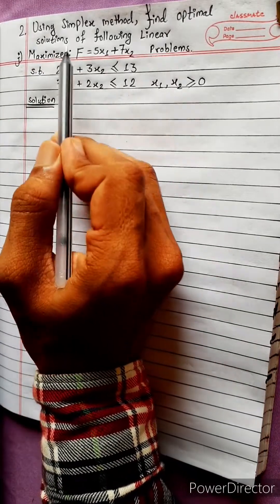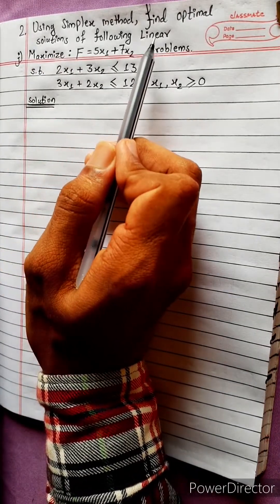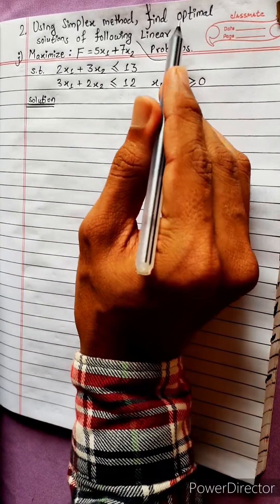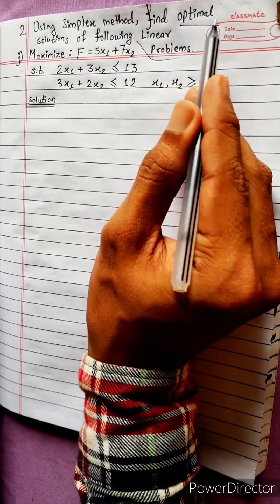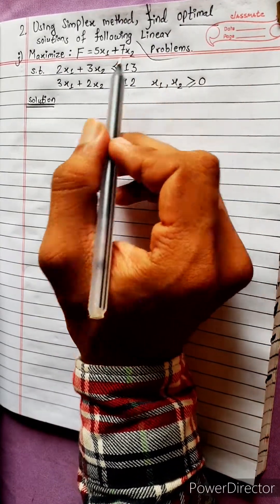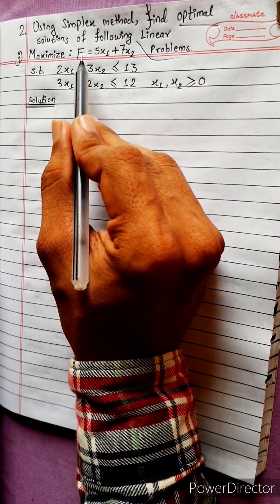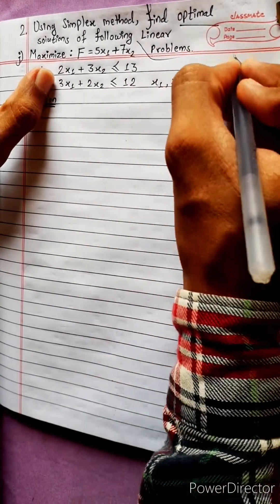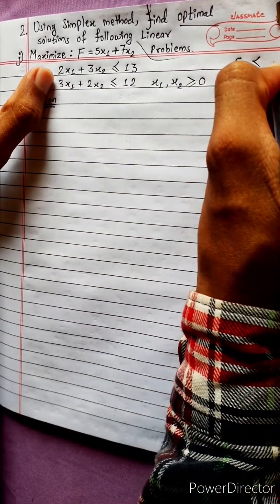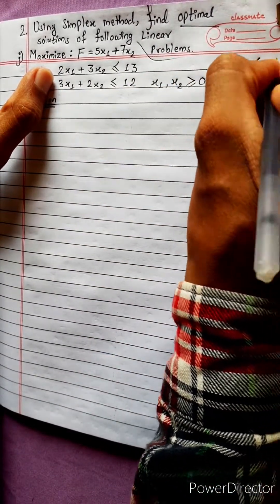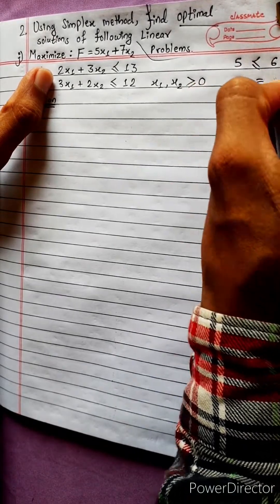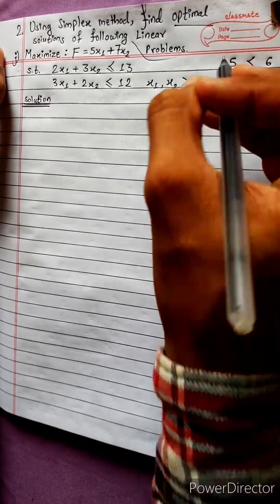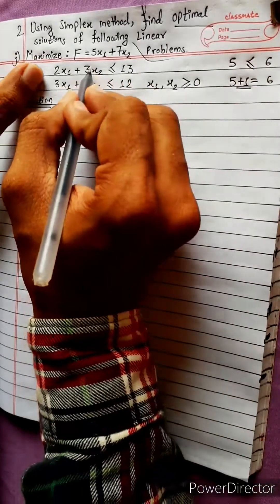Find optimal solutions of the following linear problems using the simplex method. The optimal solution is the third element of the positive angle. This is the inner rule. This is the inequality.